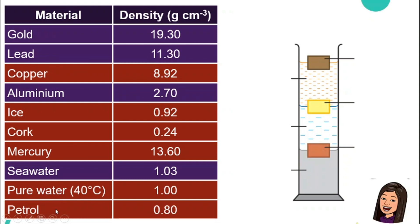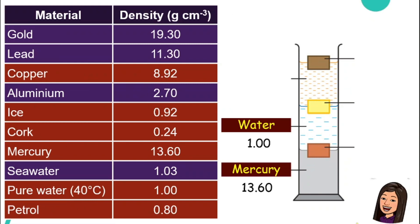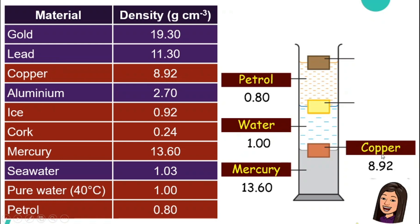So from the one that is highlighted in red, we know that the liquid part, we have mercury, pure water and petrol. Just like the first example. So we know mercury is the one at the bottom. 13.60 is the density. Water 1.00 and petrol 0.80. And then we have three objects: copper, ice and cork.